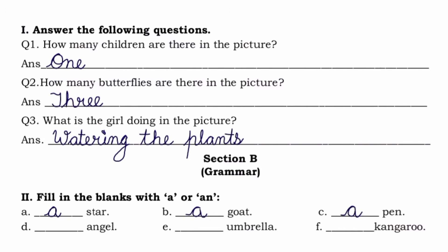The next word is 'angel'. This time we can hear a vowel sound, so we will use 'an' — an angel. Let's move to the next word, which is 'umbrella'. Again we can hear a vowel sound, so we will use 'an' — an umbrella. Now, what will we use with 'kangaroo'? It starts with K, so we can hear a consonant sound, and with consonant sounds we use 'a'. So the answer will be 'a kangaroo'.